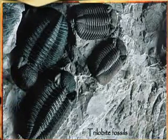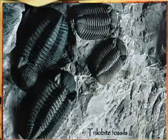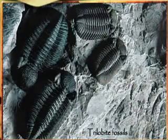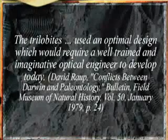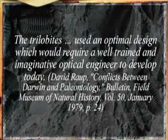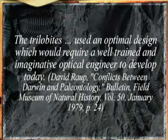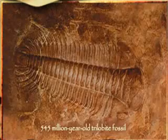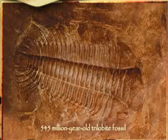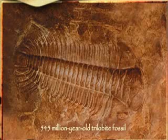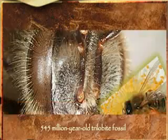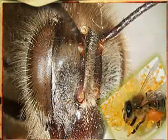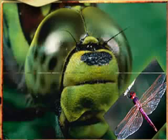On this subject, David Raup, a University of Chicago paleontologist, says that the trilobites used an optimal design which would require a well-trained and imaginative optical engineer to develop today. In addition, this same ocular system has survived right down to the present day, unchanged over 530 million years, and can still be seen in such insects as bees and dragonflies.